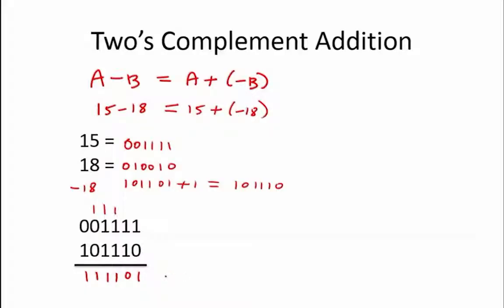To see what this number is equal to, we again flip the bits and add 1. Flipping the bits, we get 000010, and adding 1 to that, we get 000011.